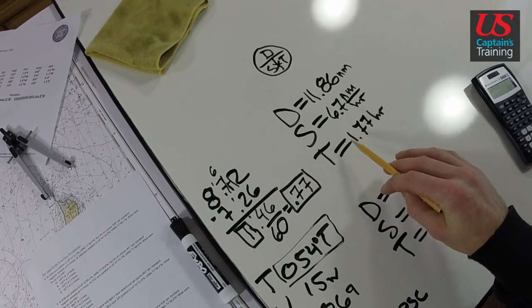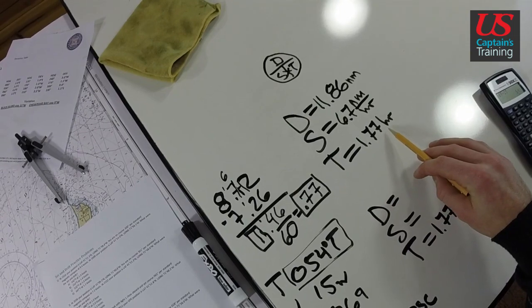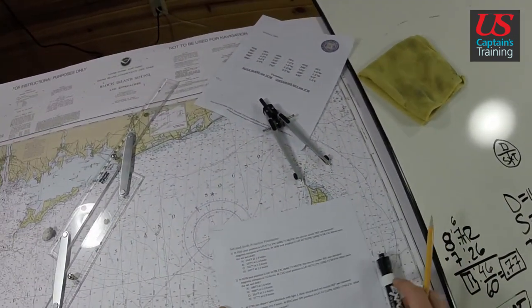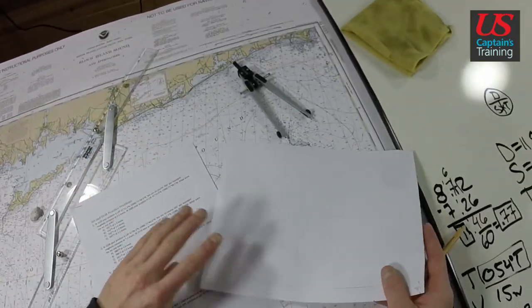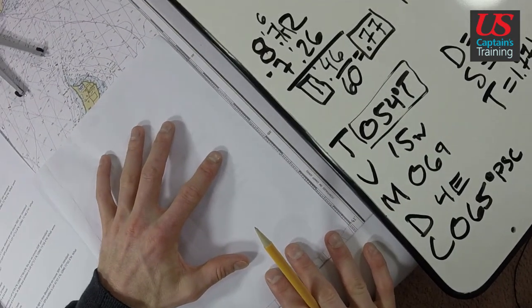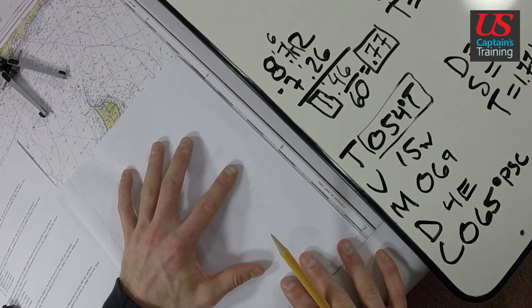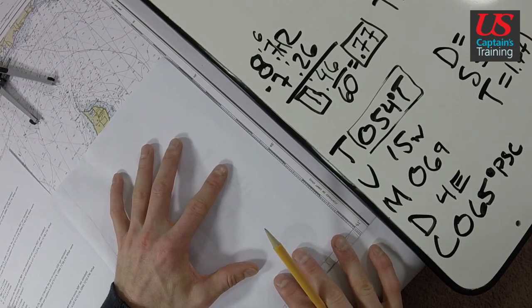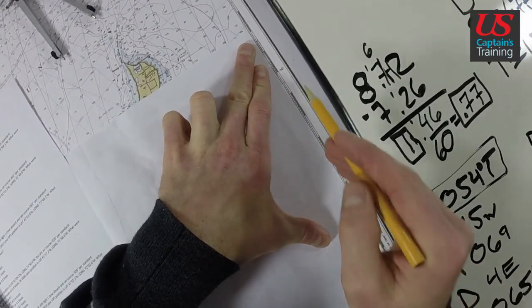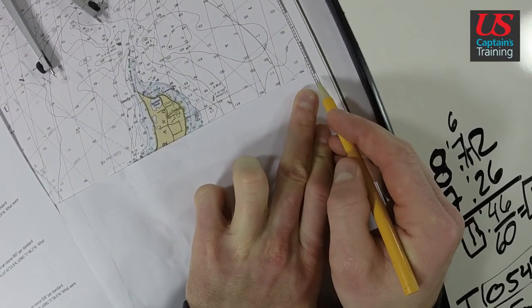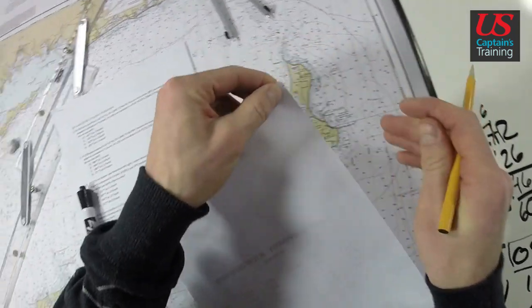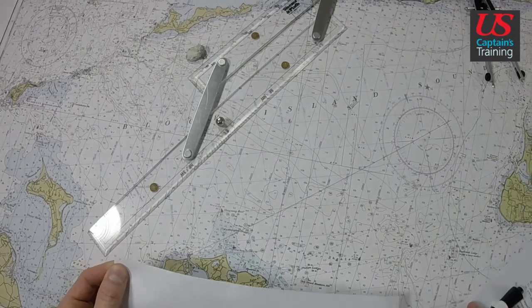11.86, right? Our speed was 6.7, we traveled for 1.77 hours. Times these two and we said we should have traveled 11.86. So now we are going to do the old deviation table trick. And we are going to get 11.86. Because our dividers won't reach, they will reach 8.5. If you stretch them they will do 8.7. So 11.86: 5, 10, 11, 11.86.